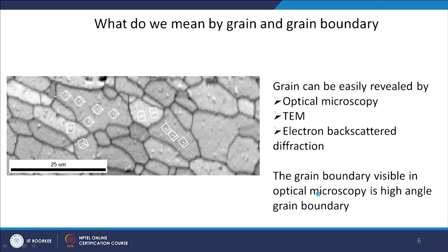What do we mean by grain and grain boundary? Just to do a recap: the microstructure shows some dark boundaries which are the high angle grain boundaries. The grain is a portion of the microstructure that is surrounded only by high angle grain boundaries. Within a grain — whether aluminium (FCC) or ferrite (BCC) — the crystal structure is the same throughout, and the identity of a grain is that the unit cell is oriented in the same way everywhere within it.